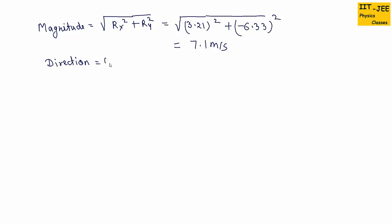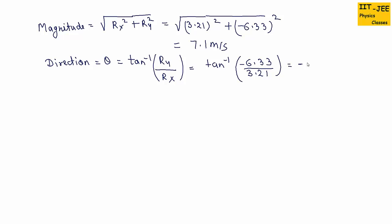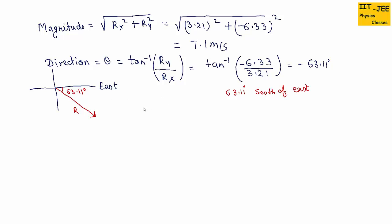For direction, we use tan inverse of ry over rx, which gives tan inverse of (minus 6.33 over 3.21) equals minus 63.11 degrees. Drawing the resultant: with east as reference, the angle is minus 63.11 degrees, meaning we move in the south direction from east. So the direction is 63.11 degrees south of east. This resultant vector represents the change in velocity: v2 minus v1 equals 7.1 m/s at 63.11 degrees south of east.